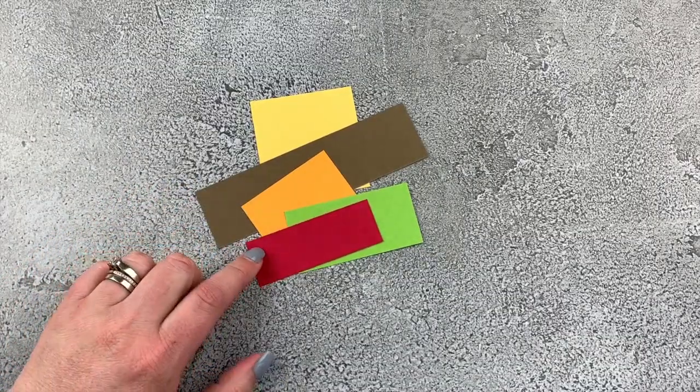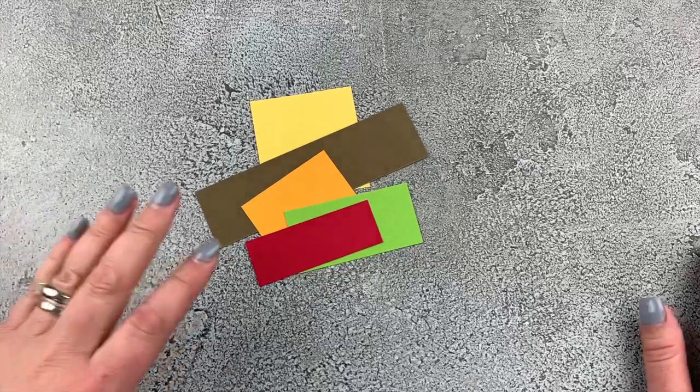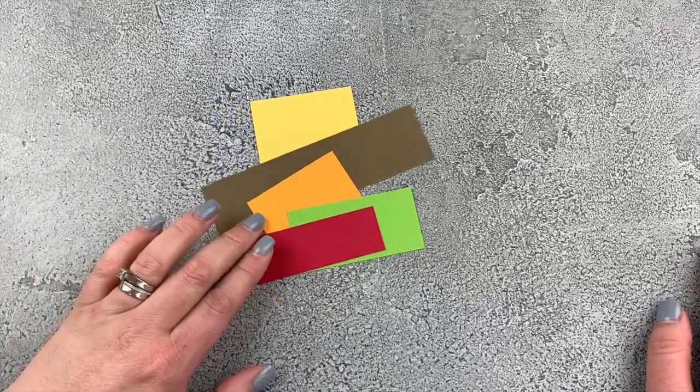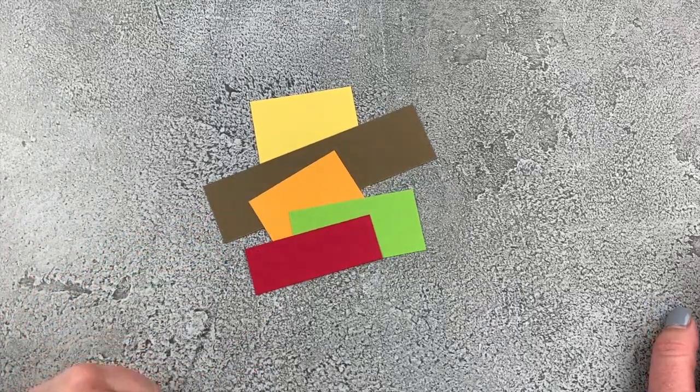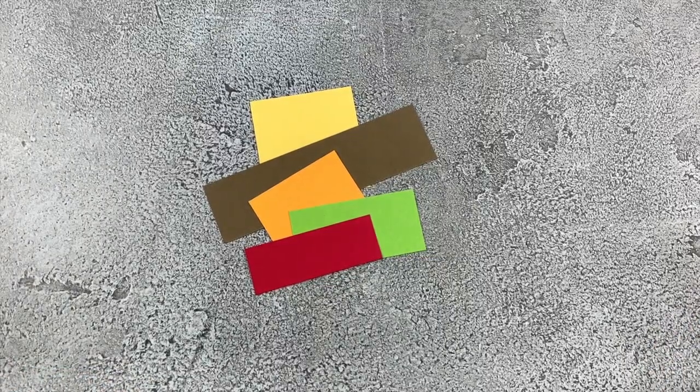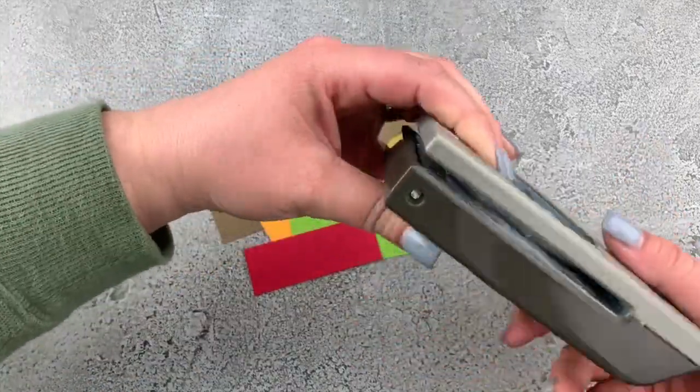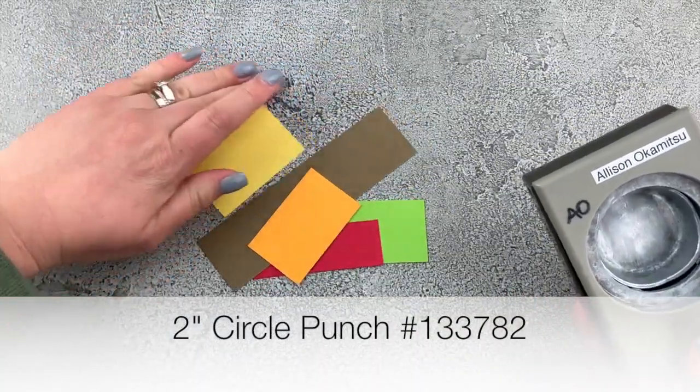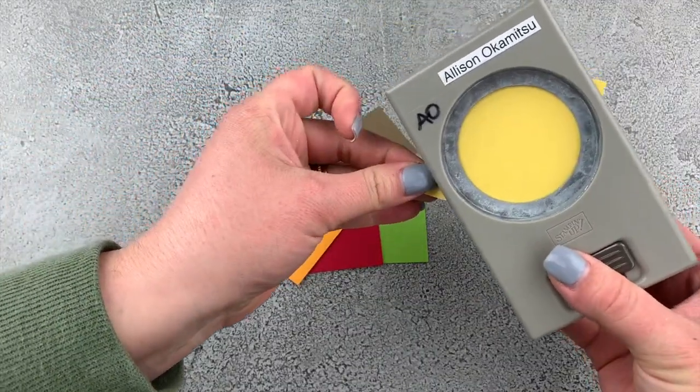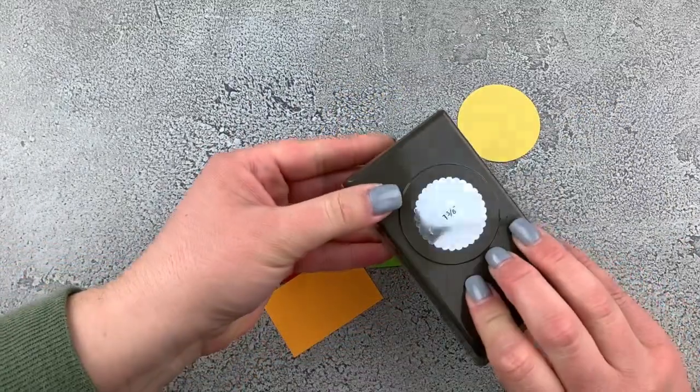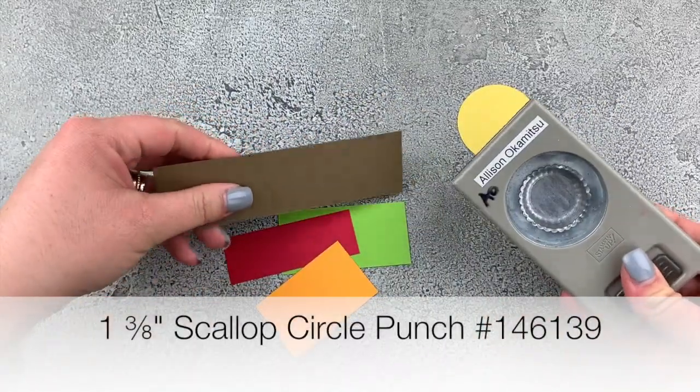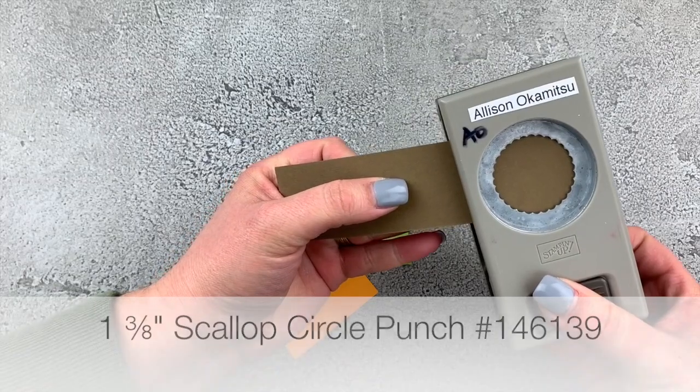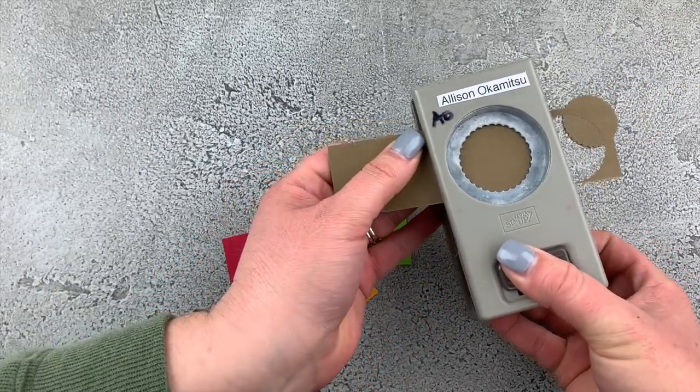I've brought in my scraps of cardstock, and I'm going to be using some handheld punches to create a little bit of punch art. The first piece is a circle with the 2-inch circle punch from the Daffodil Delight cardstock. Next, I have the 1 3/8 inch scallop circle, and I'm going to punch out two from the Soft Suede.